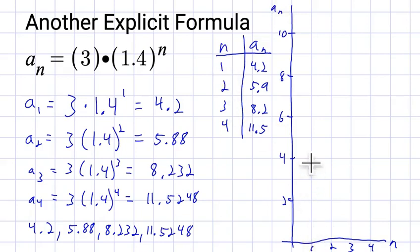Alright. So first term, 4.2. Second term, 5.9. Third term, 8.2. And the fourth term, 11.5.